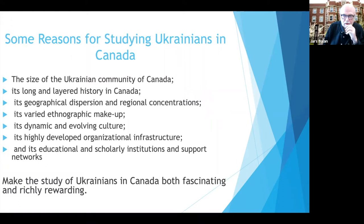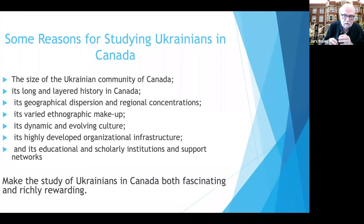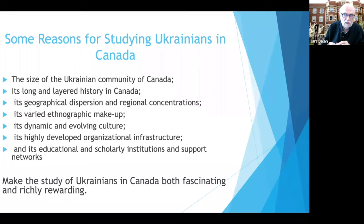Why study Ukrainians in Canada? I think it's just a fabulous topic. First of all, the size of the Ukrainian community. Ukrainians have immigrated to Canada in four major waves. The first wave brought 170,000 ethnic Ukrainians to Canada. The second wave in the interwar period was 68,000. The third wave was 53,000 — that was in the post-Second World War period, the refugee immigration. Since Ukrainian independence, another 60,000 or more have immigrated to Canada. The community is large and growing, and it has a long and layered history in Canada. We're celebrating the 130th anniversary of the first immigrants arriving.